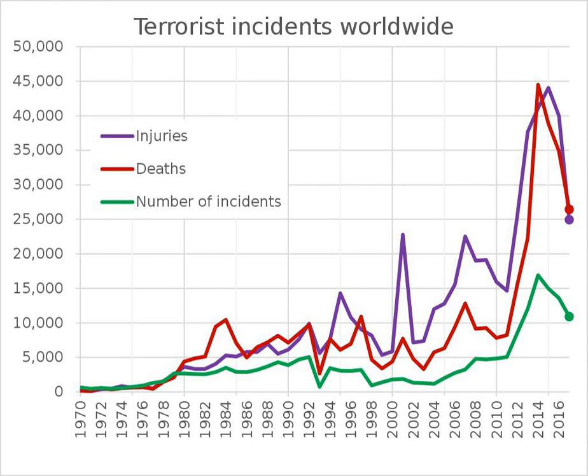The Global Terrorism Database is a database of incidents of terrorism from 1970 onward. As of July 2017, the list extended through 2016, with incomplete data for 1993 due to issues with that year. The database is maintained by the National Consortium for the Study of Terrorism and Responses to Terrorism at the University of Maryland, College Park in the United States. It is also the basis for other terrorism-related measures, such as the Global Terrorism Index published by the Institute for Economics and Peace.